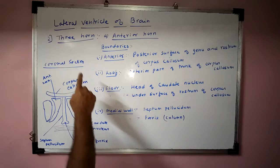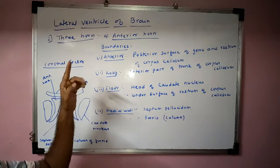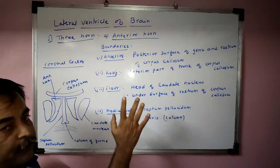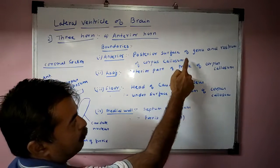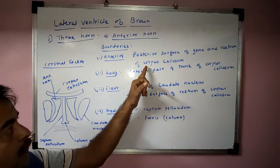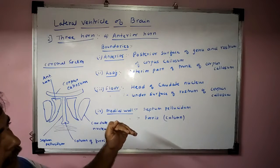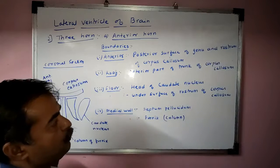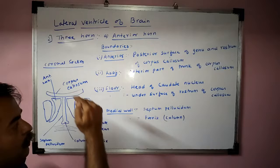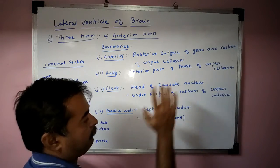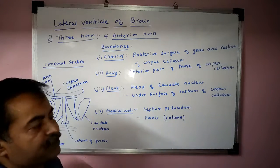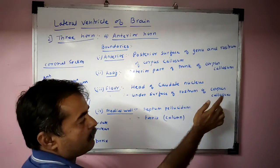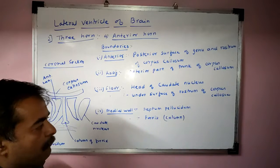Now the second part — the three horns. The first horn is the anterior horn. The anterior horn is bounded anteriorly by the posterior surface of the genu and the rostrum of the corpus callosum. The roof is formed by the anterior part of the trunk of corpus callosum. The floor is formed by the head of the caudate nucleus and the under surface of the rostrum of corpus callosum.